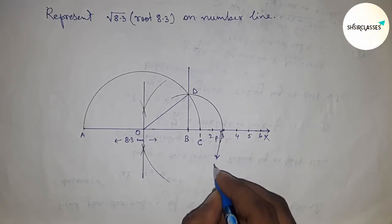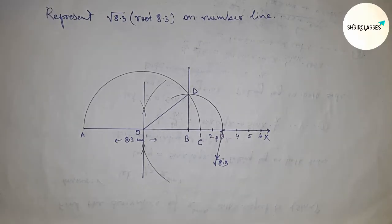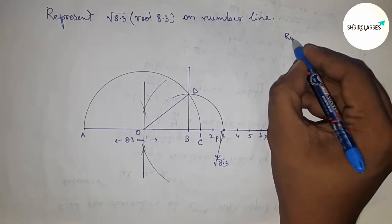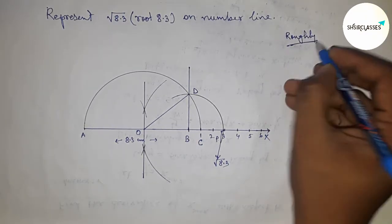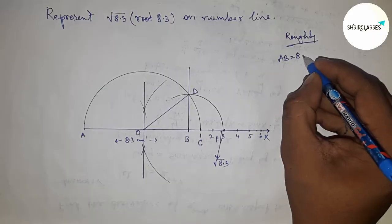This is point B and this is the representation of √8.3. So this is √8.3. Next, let's discuss the calculation. Given: AB = 8.3 and BC = 1 centimeter.